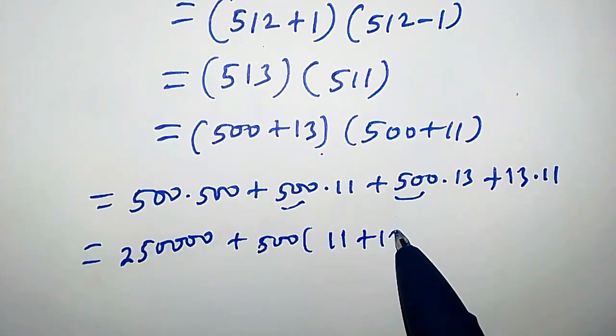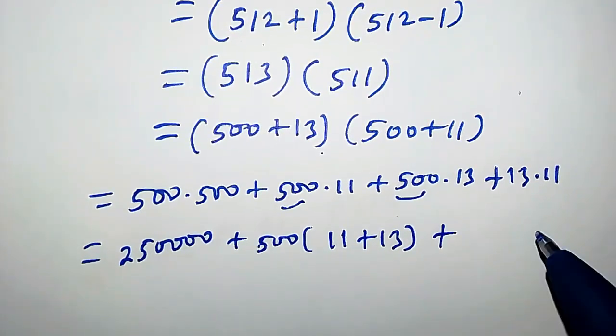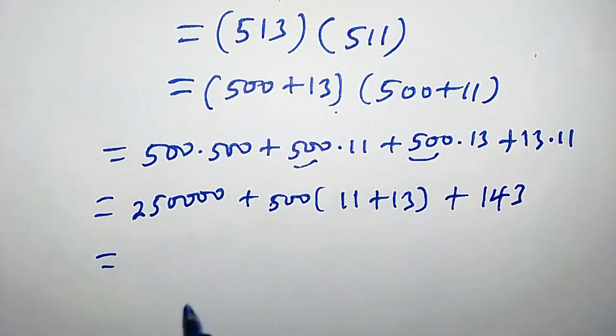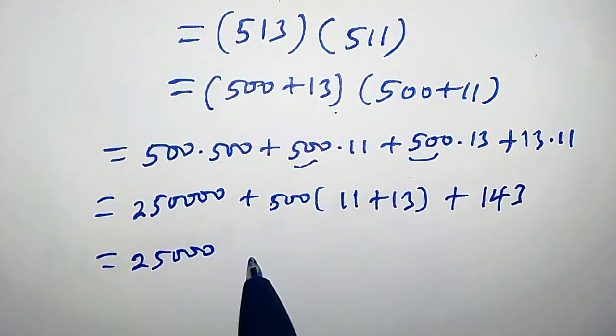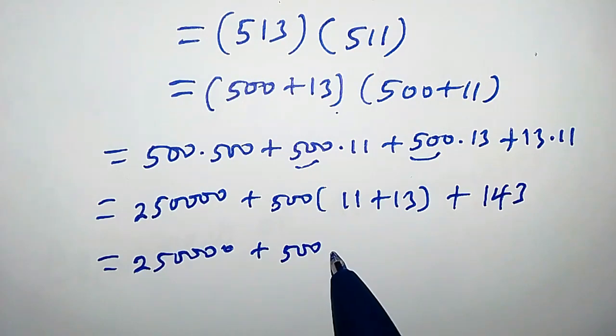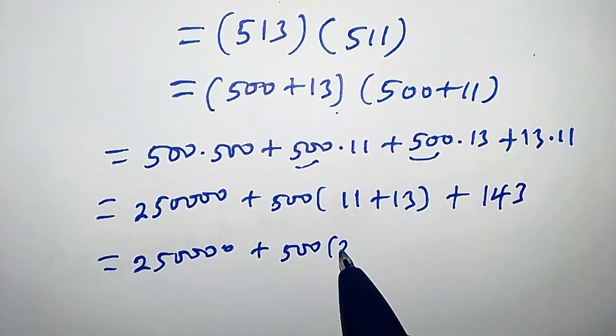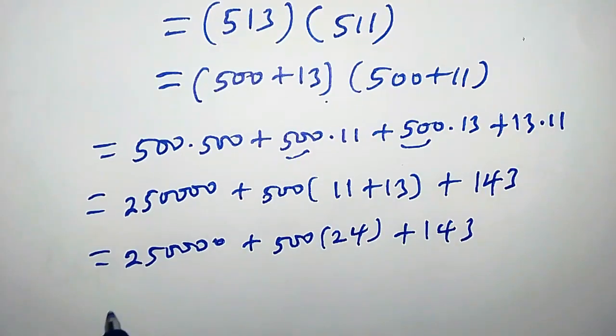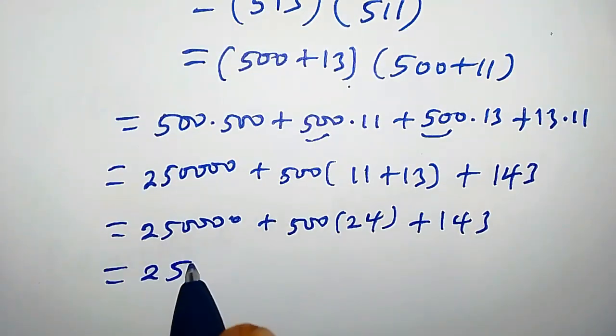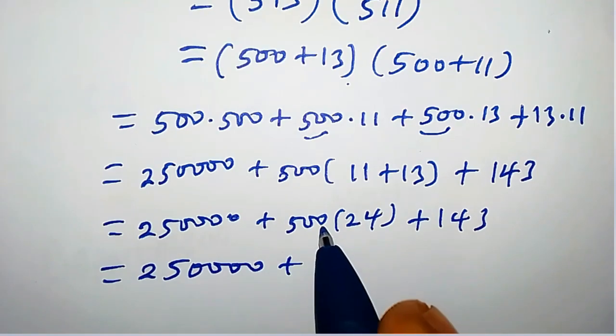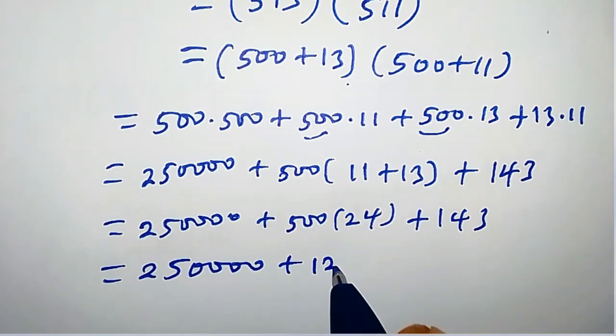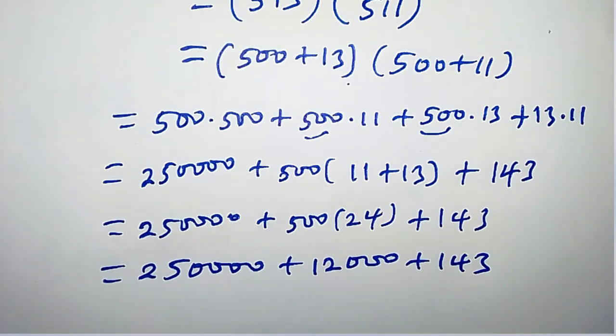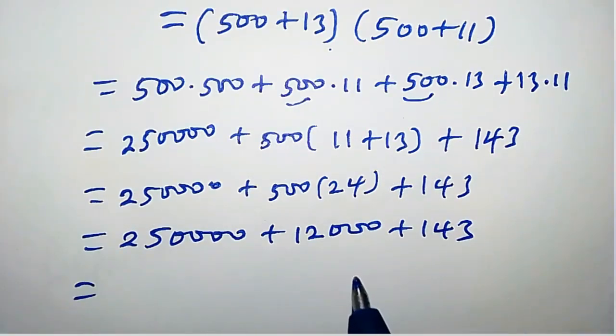So we're gonna have 500 times 500 plus 500 into 11 plus 13, plus 13 times 11, that is simply 143. So this equals 250000 plus 500 times 11 plus 13, that is 24, plus 143. This equals 250000 plus 500 times 24, that is 12000, plus 143.